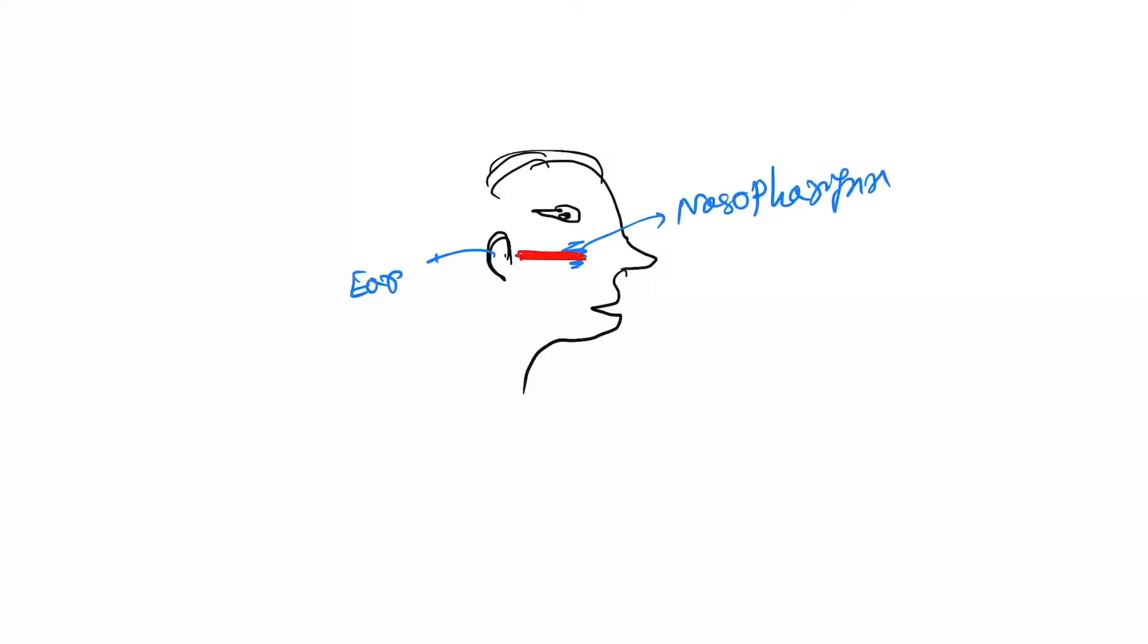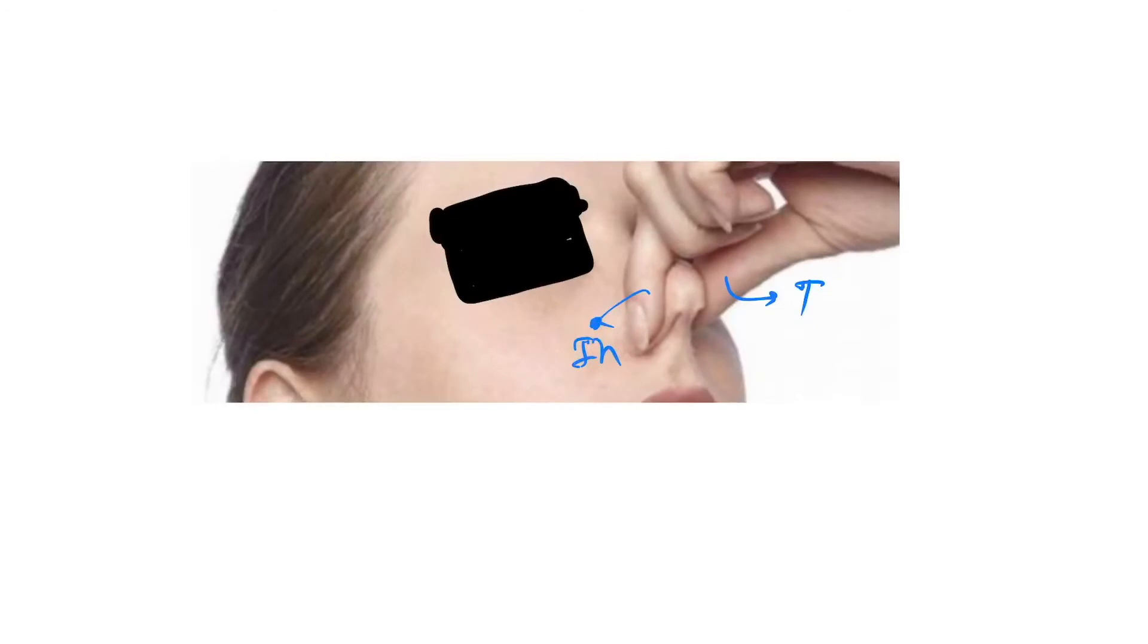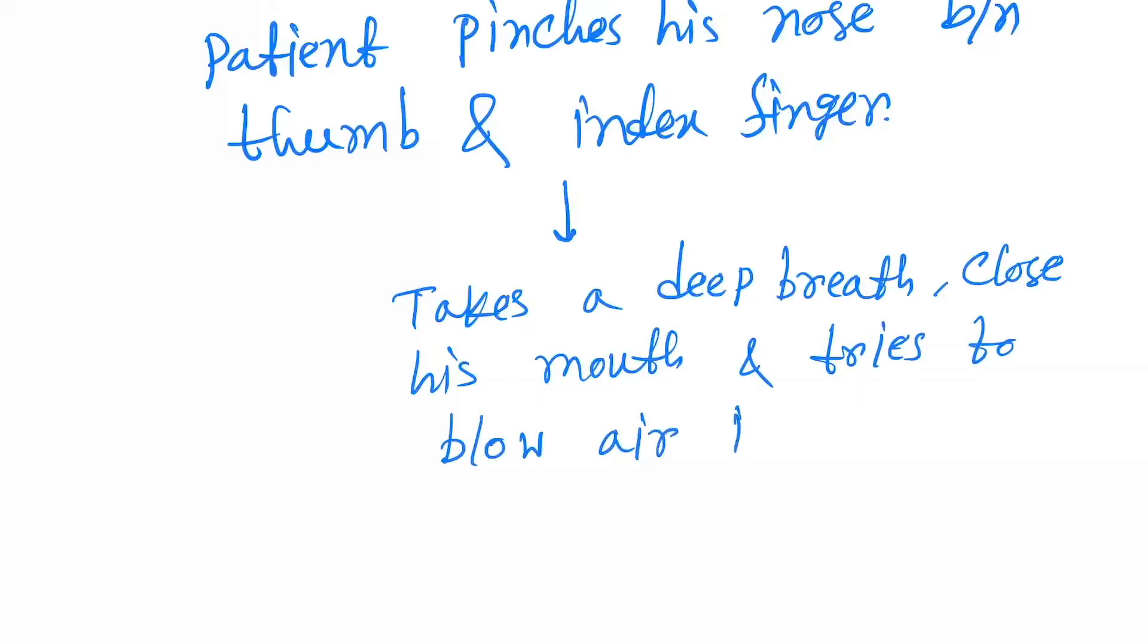Now see the procedure. First, the patient pinches his nose between thumb and index finger. Here in this image you can see the patient is pinching his nose. Then he takes a deep breath, closes his mouth, and tries to blow air into the ears.